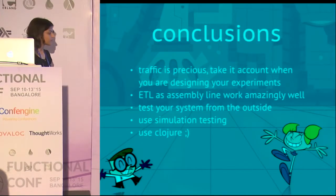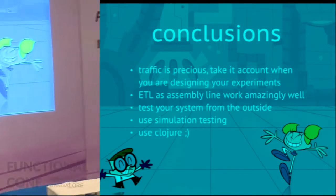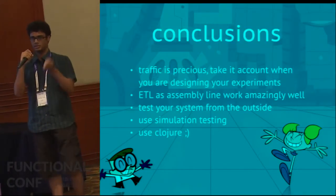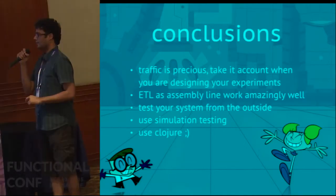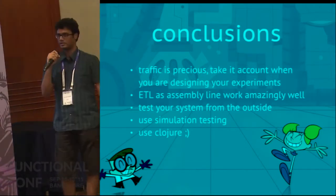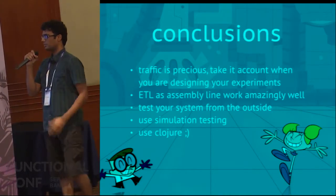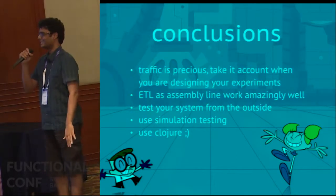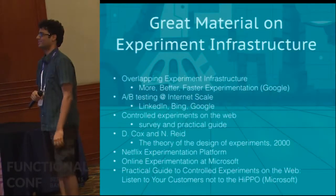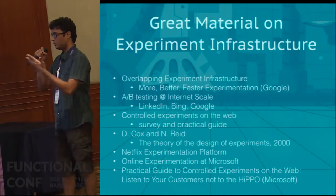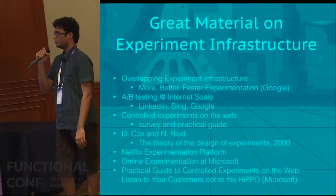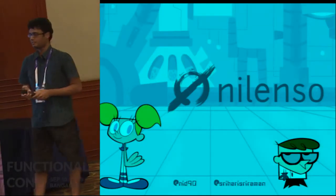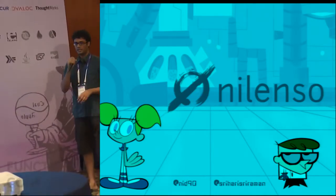In conclusion: traffic is precious — that's the fourth time I've said it, and not just for Staples, it's Google, it's everyone doing experimentation. You can build assembly lines in Clojure really well and ETL is a good example of where to use that. Test your system from the outside using simulation testing, and yes, use Clojure. Here are some really good papers and books that we went through — these will remain on the slides. That's it. Thanks. If you have any questions, we can take them.